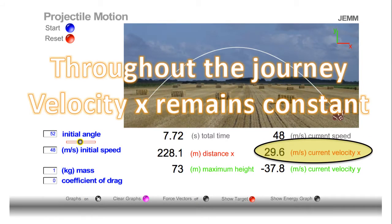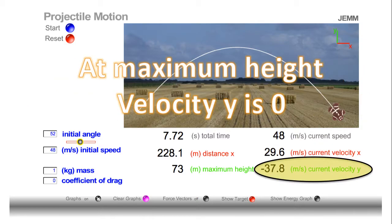So in summary, before we continue, throughout the journey, velocity X remains constant. And at maximum height, the velocity Y is zero.